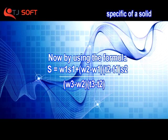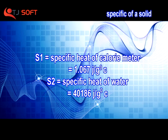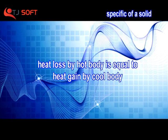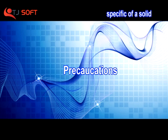Using the formula with the specific heat of the calorimeter and the specific heat of water, we can find S. The principle of this experiment is: heat lost by the hot body is equal to heat gained by the cold body.